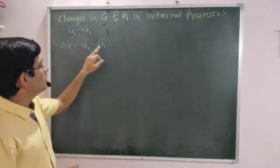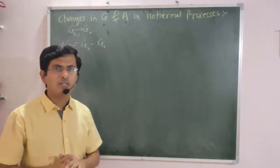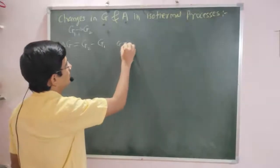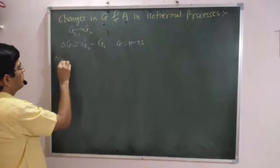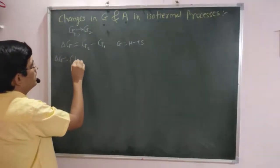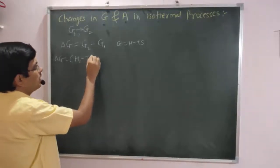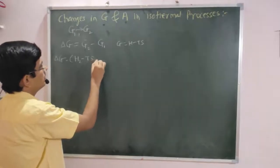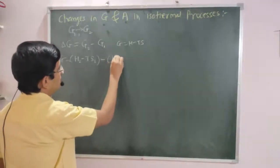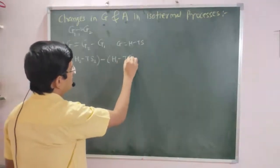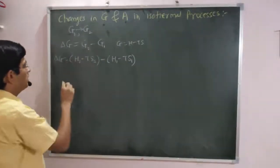From the definition of free energy, we know G is equal to H minus TS. So we can write delta G equal to G2 minus G1, which gives H2 minus TS2 minus H1 minus TS1, where G1 is equal to H1 minus TS1 and G2 is equal to H2 minus TS2.